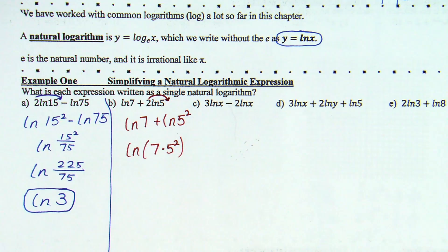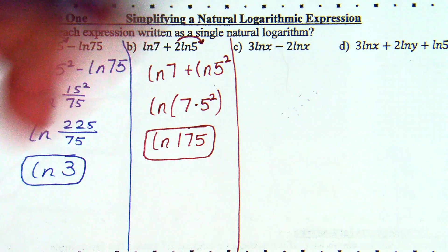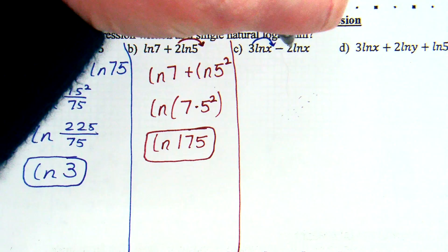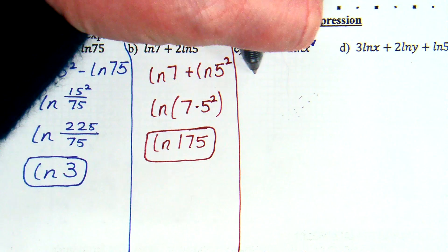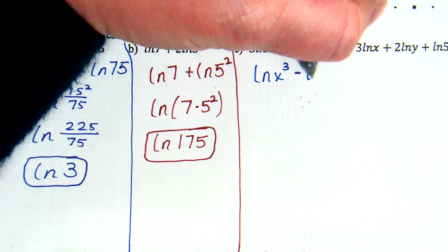Coming back to us now? Okay, C. 3 natural log of X minus 2 natural log of X. Yes, it has X, but the steps are still the same. So, we'll start with the power property. So, 3 natural log of X becomes natural log of X cubed minus natural log of X to the second.